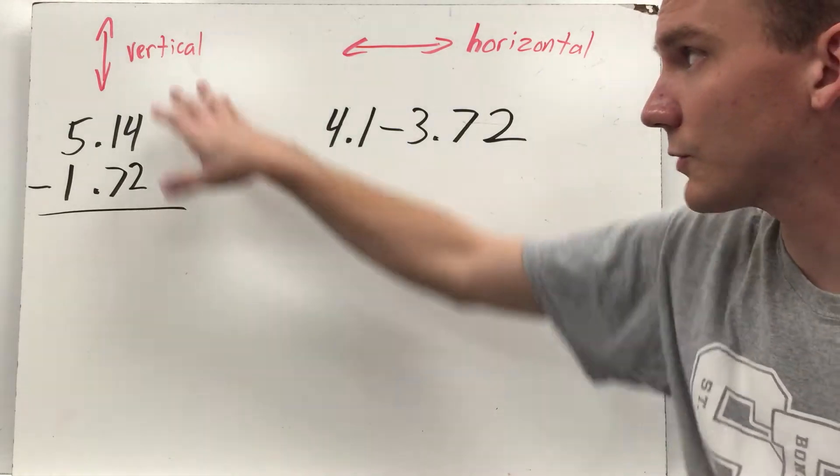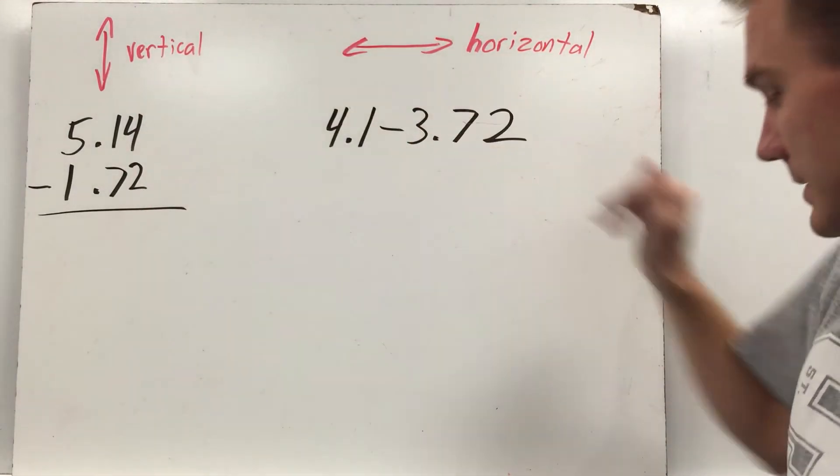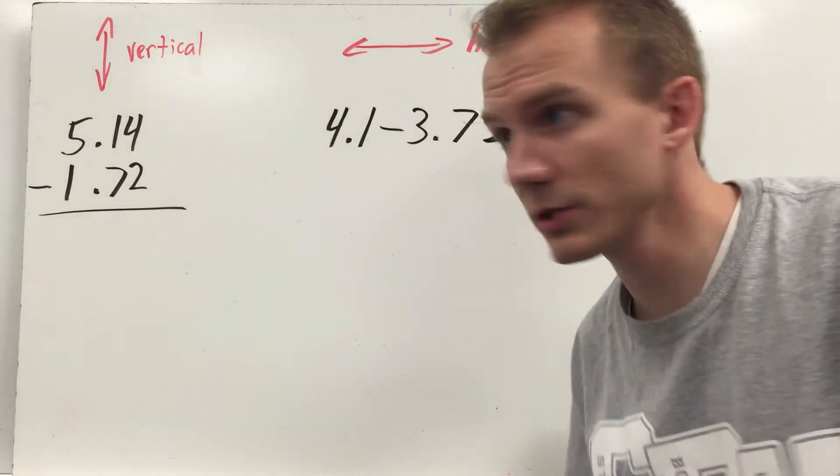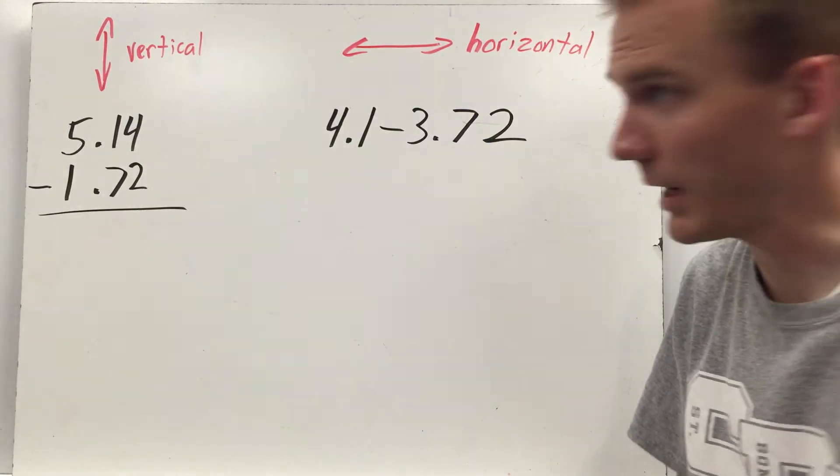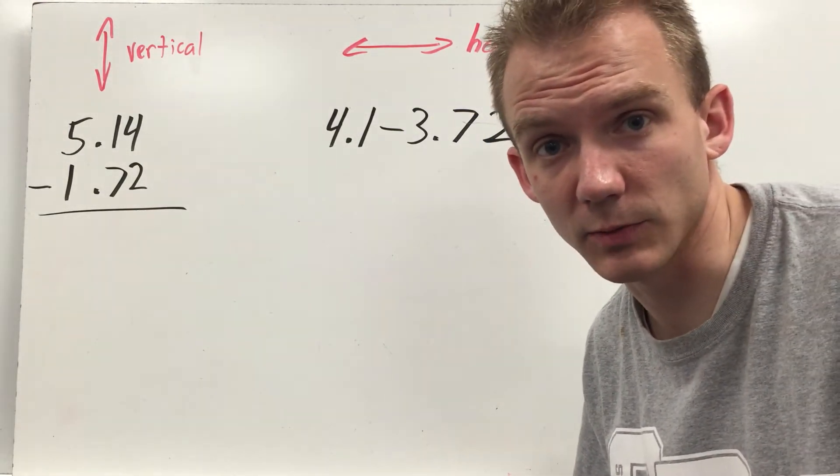All right, so you might see your problems written vertically, up and down, or horizontally, side to side. I'll tell you this, you're always going to want to take it if it's horizontal and write it vertically. Let me show you how to solve these problems, subtracting decimals to the hundredths.